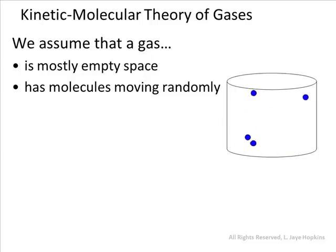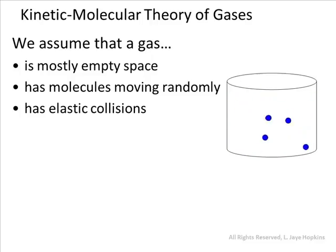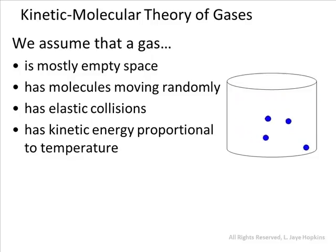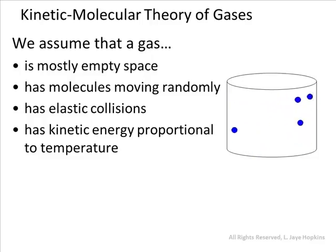Another assumption is that gases have elastic collisions. Elastic means bouncy or springy — collisions where an object bounces off another and has exactly as much energy afterward as before. So even though molecules collide with each other, they continue bouncing around and don't run out of energy. The final assumption is that all gases have kinetic energy proportional to temperature: as temperature goes up, kinetic energy goes up, and the molecules move faster.